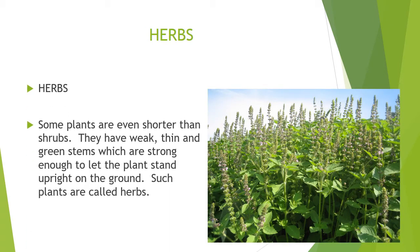Herbs. Some plants are even shorter than shrubs. They have weak, thin, and green stem, which is strong enough to let the plant stand upright on the ground. Such plants are called herbs. The stem of herbs does not have many branches, and these plants have a short lifespan. Examples are tulsi, coriander, aloe vera, spinach, etc. Dried herbs are also used to add flavor to food and are used in medicines as well. Surprisingly, a huge plant like the banana plant is also a herb.